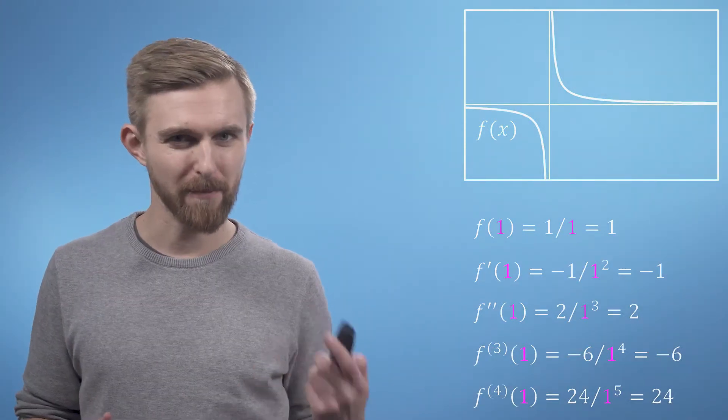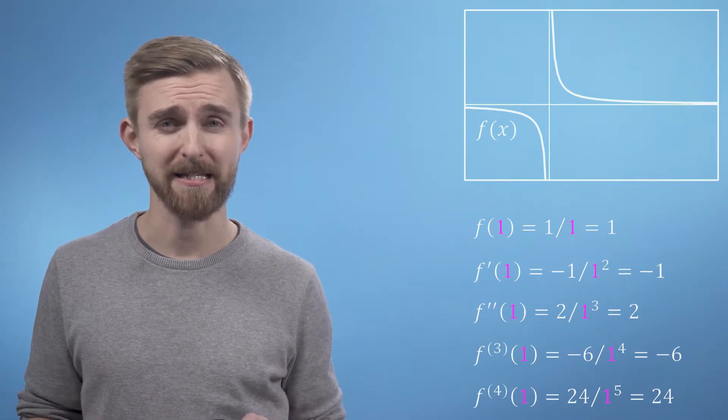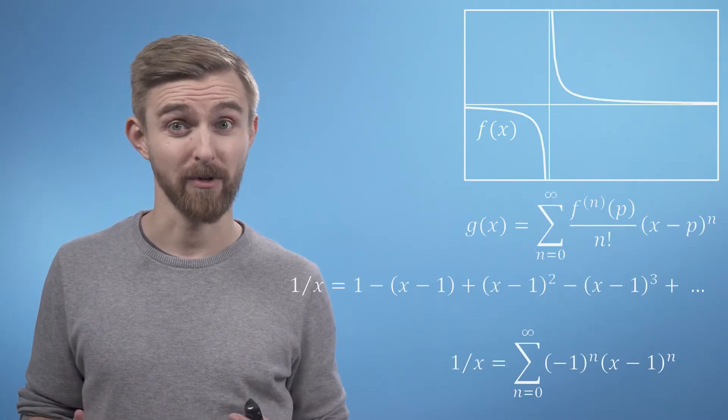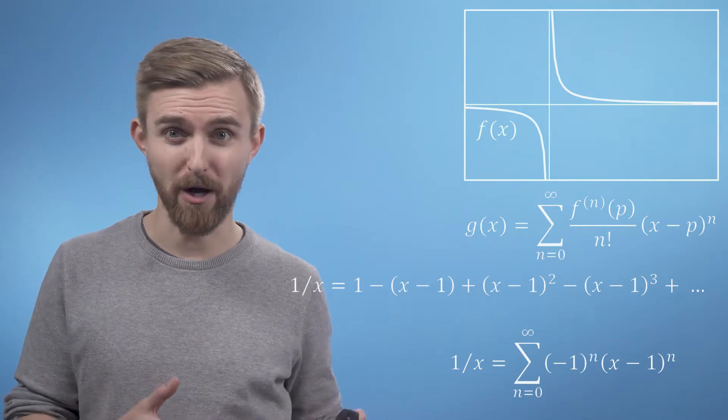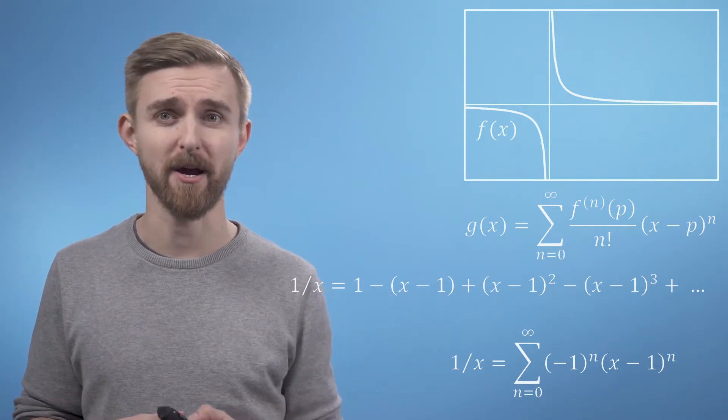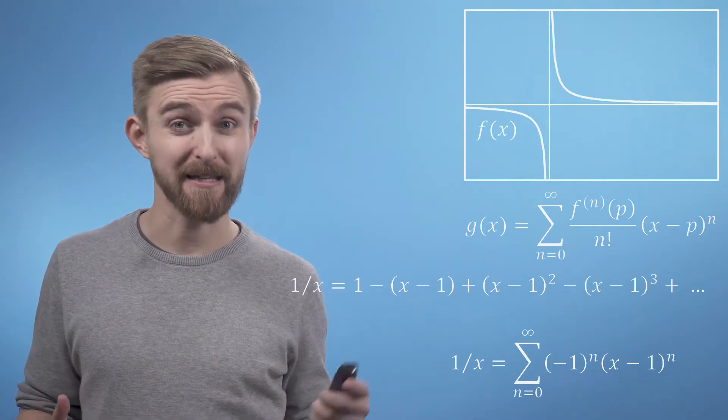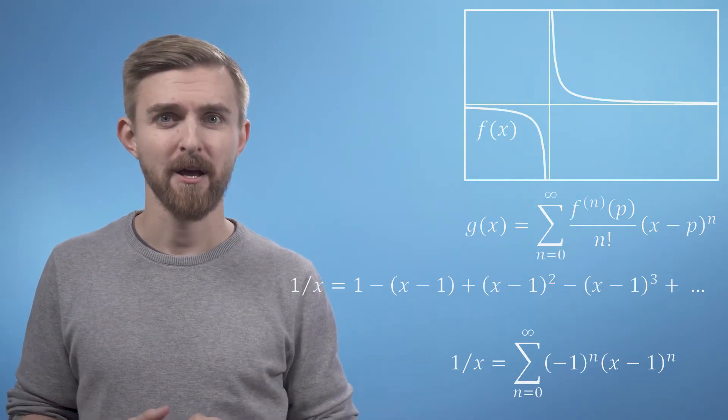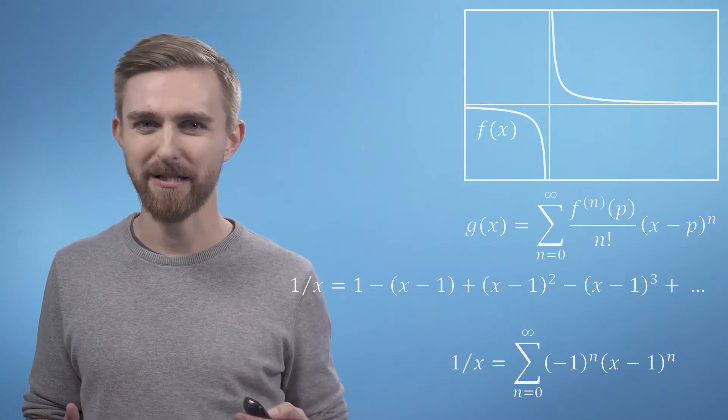So if we now substitute these values into our Taylor series formula the factorial terms will cancel. And all we are left with is a sum of x minus 1 to the power of n terms with alternating signs which we can simplify to this neat summation notation.